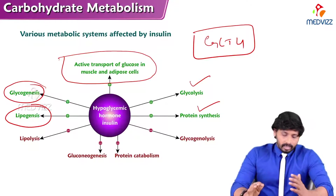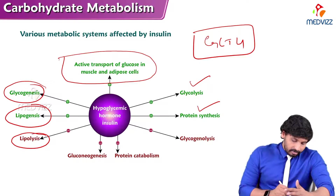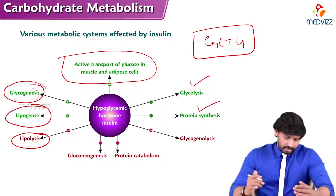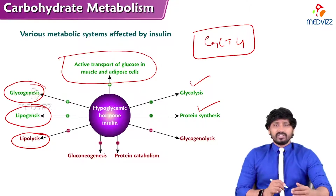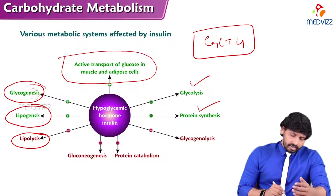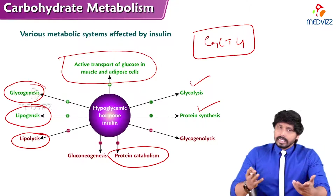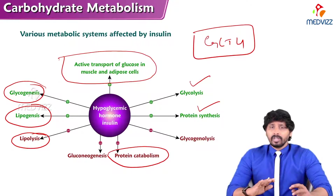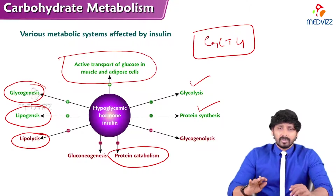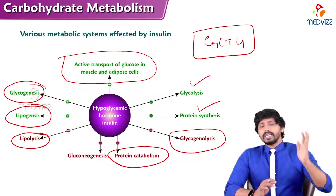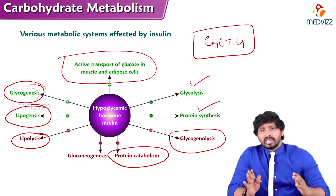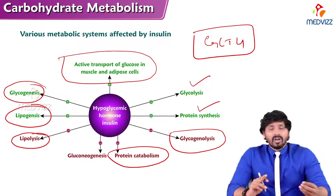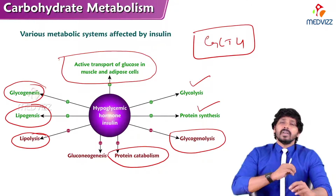Insulin also has a negative modulatory effect on lipolysis — since we already have excess energy, there is no need for fatty acid degradation. Insulin inhibits lipolysis. Similarly, gluconeogenesis is inhibited by insulin — already glucose is present, so there is no need to produce it from non-carbohydrate sources. Protein catabolism is also inhibited by insulin. While glycogenesis is promoted, glycogenolysis is inhibited. Overall, all synthetic pathways — glycolysis, protein synthesis, glycogenesis — are activated by insulin, and all catabolic pathways are inhibited.